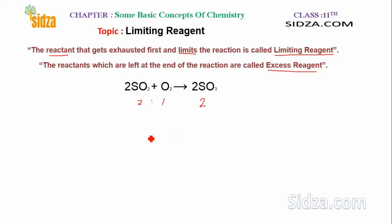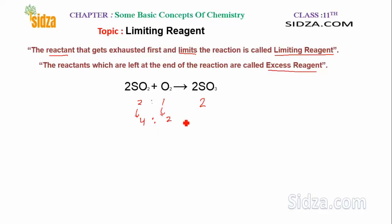If we react the same components but in a different ratio — suppose instead of 2 moles of SO2 I take 4 moles of SO2 — then I also have to double the oxygen, so I should take 2 moles of oxygen. If I react SO2 and oxygen in a 4:2 ratio, I get 4 moles of SO3.